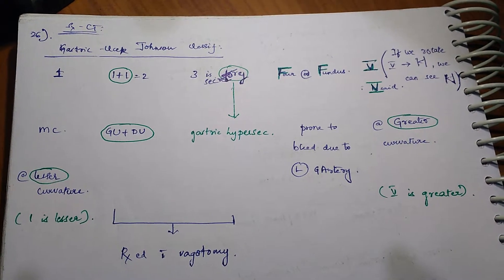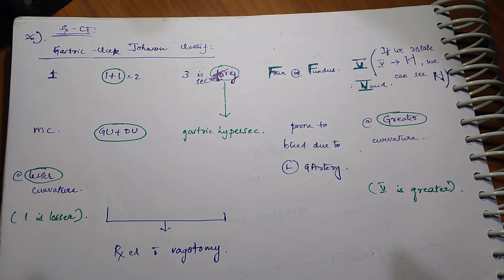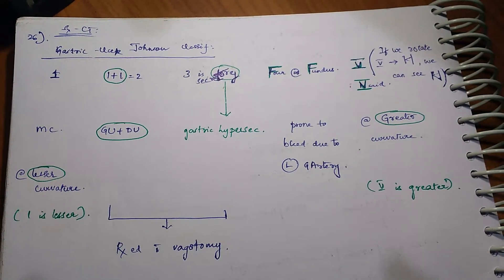Hi guys, this is a video about gastric ulcer types according to Johnson classification. According to Johnson, there are 5 types of gastric ulcers: 1, 2, 3, 4, and 5.